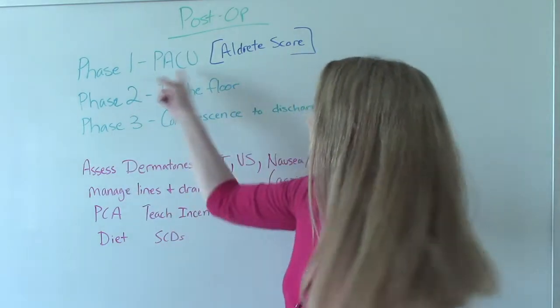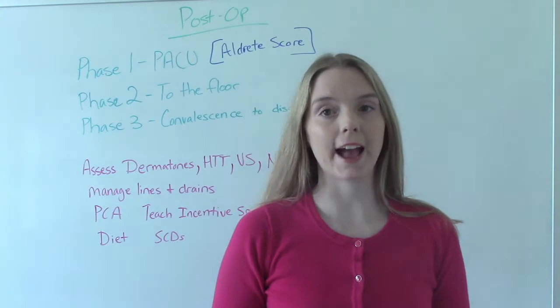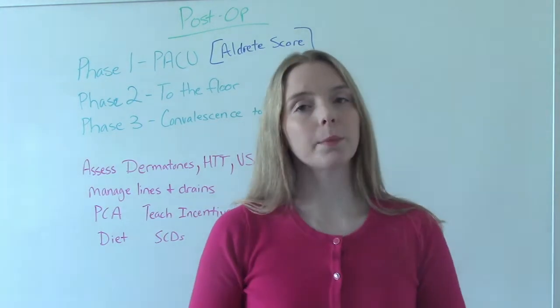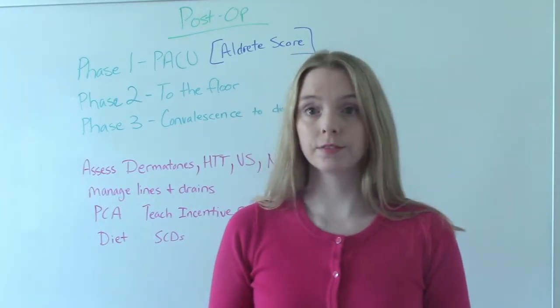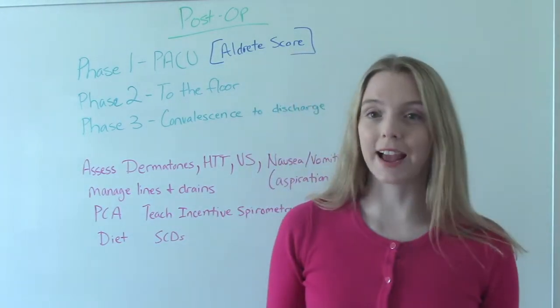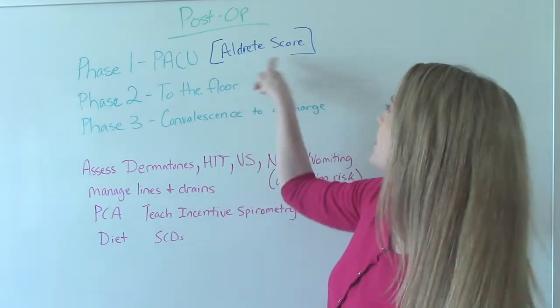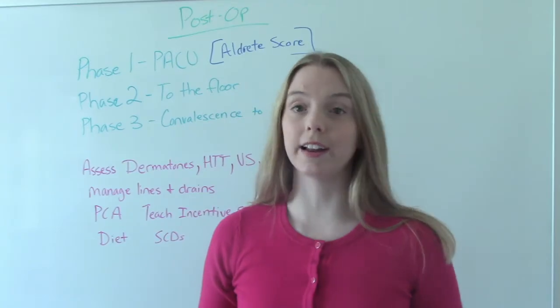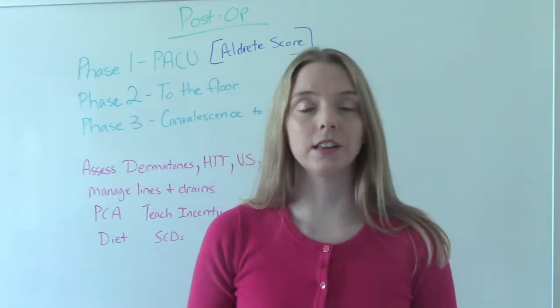So in phase one, this is when we go from the OR to the PACU, the post anesthesia care unit. Usually you are in the PACU for about two hours. In order to get out of the PACU, we do something called the Aldrete score. And I'll talk about that here when I'm all done with this, about how the patient is scored and how we determine if they're stable enough to leave the PACU.